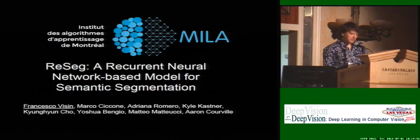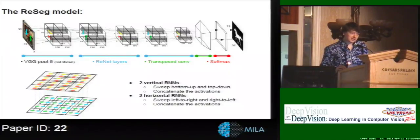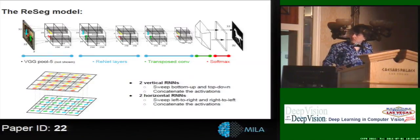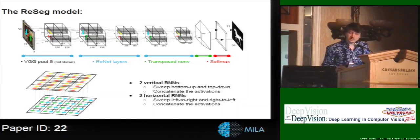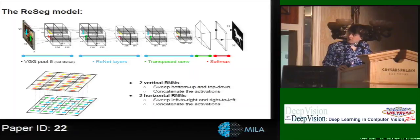We present a model to perform semantic segmentation that uses both RNNs and CNNs. On the top of the slide you can see the model. We first apply a pre-trained VGG16 up to the last pooling layer. We then apply multiple RNN layers that are displayed in blue in the slide.